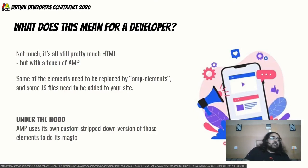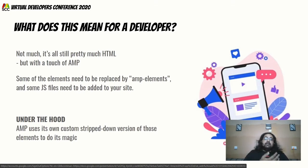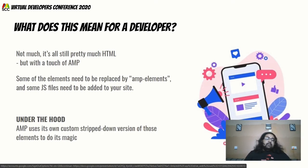What does AMP mean for a developer? It doesn't mean a lot of changes. You are still working with HTML, just with a few AMP-specific considerations. For example, certain elements need to be replaced by AMP elements — there are reasons for this which we'll get into — and you need to add a JavaScript file to your site. AMP has certain conventions — or rather rules — because if you break them your page is not a valid AMP page. These rules standardize the kind of experience AMP tries to deliver.